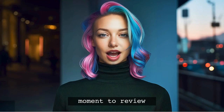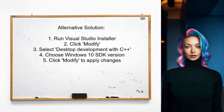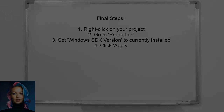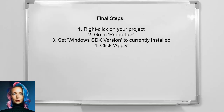Another user's solution involves modifying your Visual Studio installation. First, run the Visual Studio installer and click Modify. Then ensure that Desktop Development with C++ is selected. In the installation details, choose the Windows 10 SDK version and click Modify to apply the changes. Afterward, right-click on your project, go to Properties, and set the Windows SDK version to the currently installed version. Finally, click Apply to save your changes.